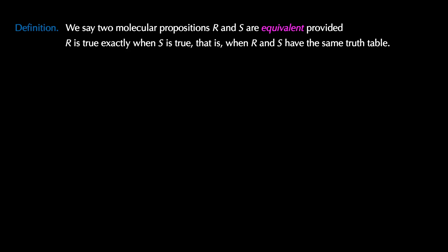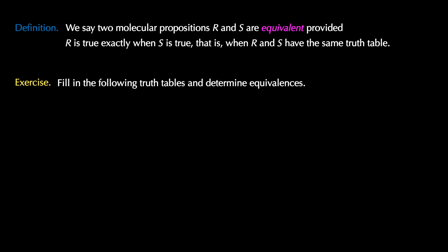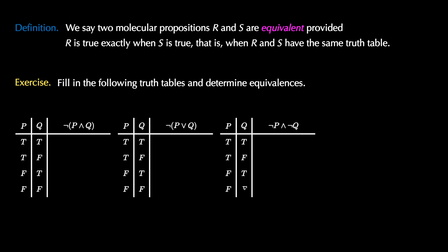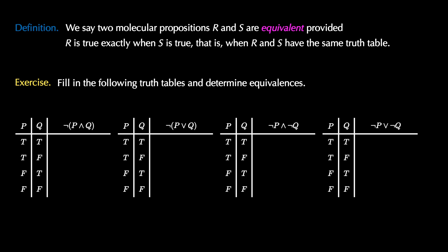The final new concept in this video is how to define logical equivalence using truth tables, and along the way we'll learn DeMorgan's Laws. We will say two molecular propositions R and S are equivalent provided R is true exactly when S is true — that is, when R and S have exactly the same truth table. We will look at four truth tables: the negation of P AND Q, the negation of P OR Q, NOT P AND NOT Q, and NOT P OR NOT Q.